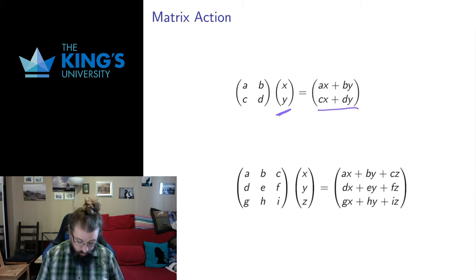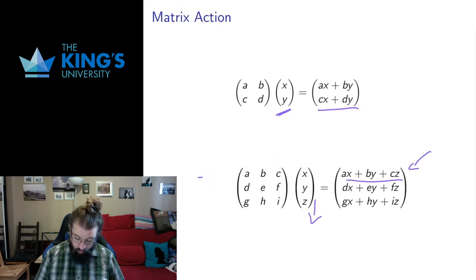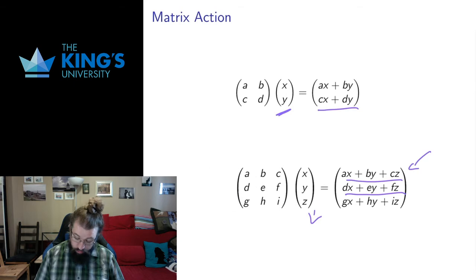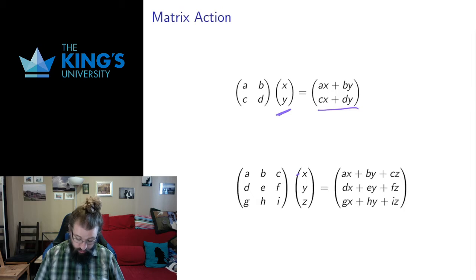This works the same way in R3: we go across the rows of the matrix and down the vector. The first component is A times X plus B times Y plus C times Z. The second component is D times X plus E times Y plus F times Z. The third component is G times X plus H times Y plus I times Z. In this way we get a transformation that sends a vector in R3 to some other vector in R3.